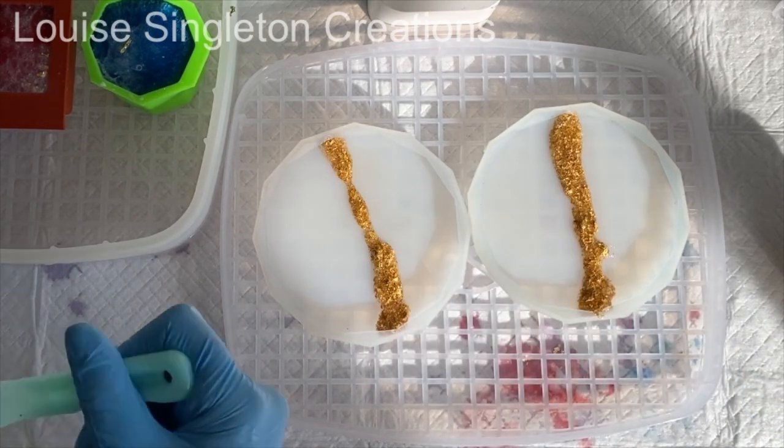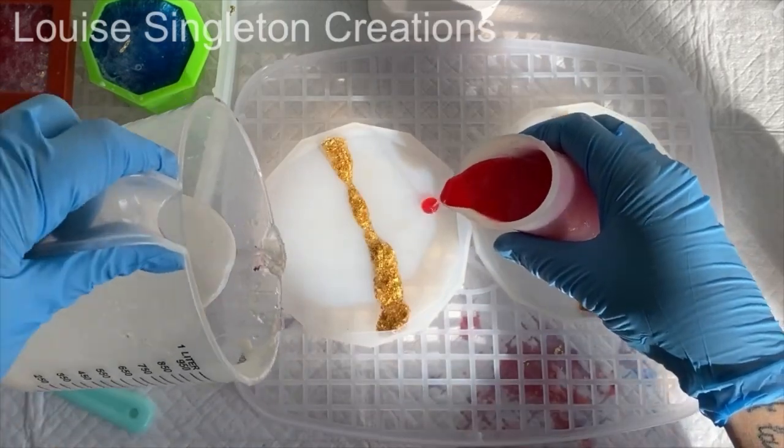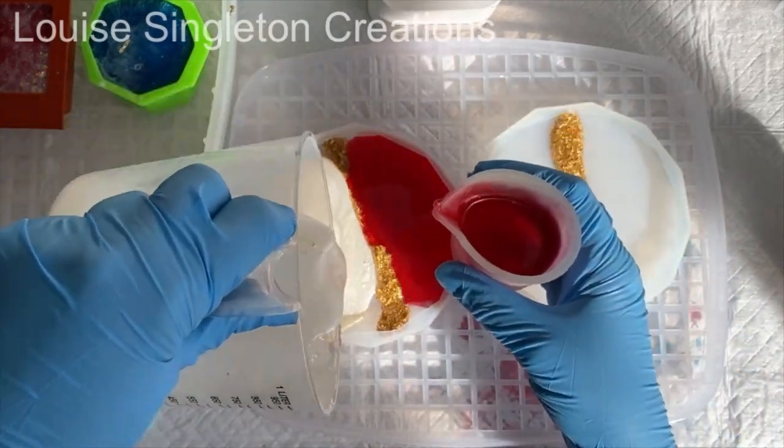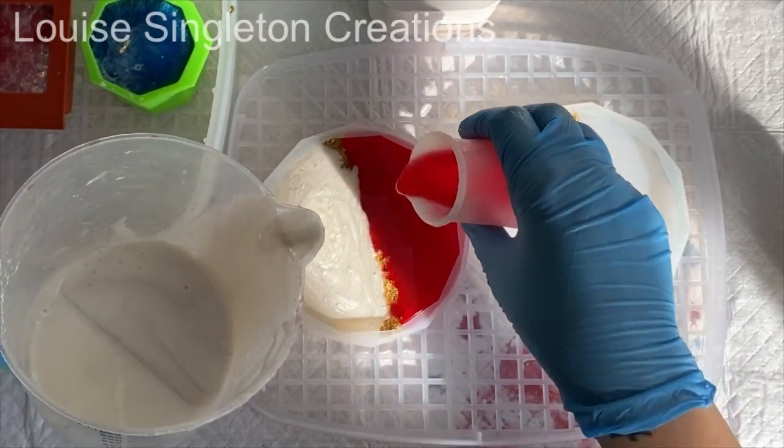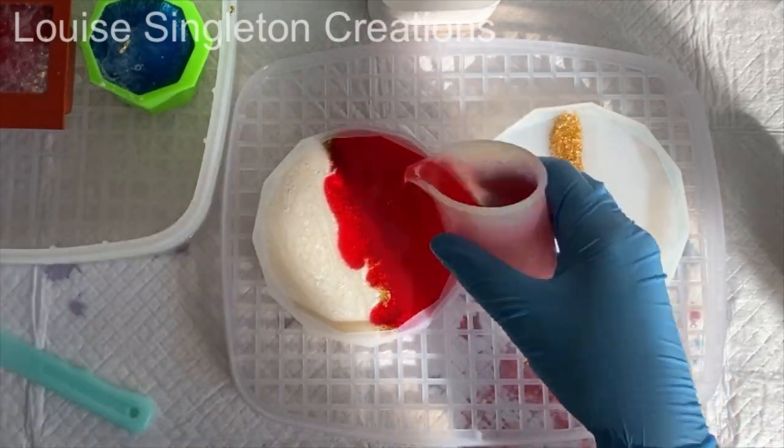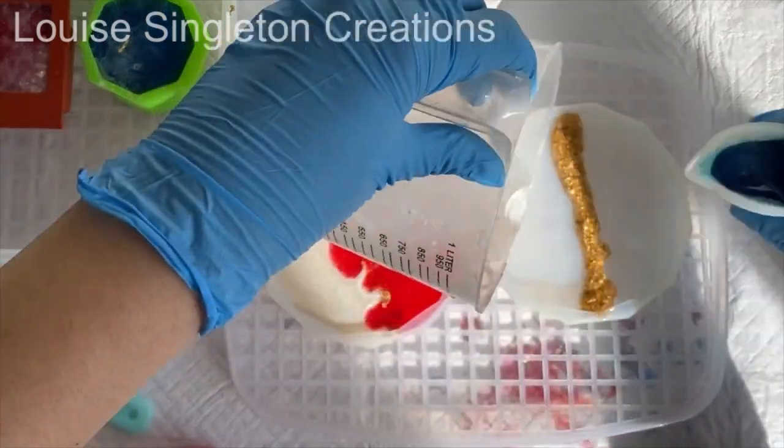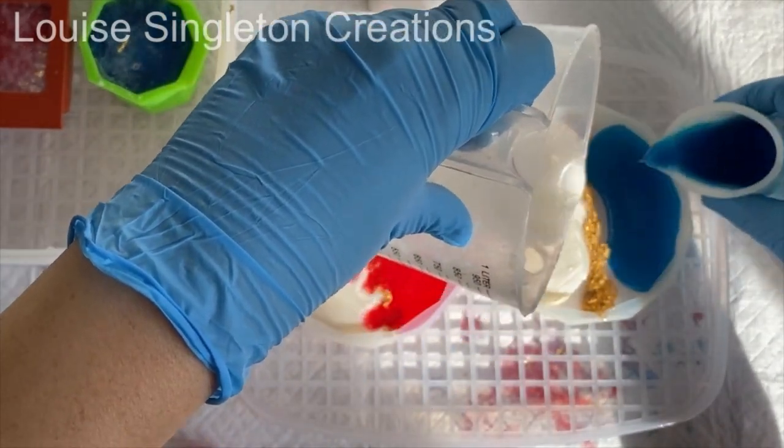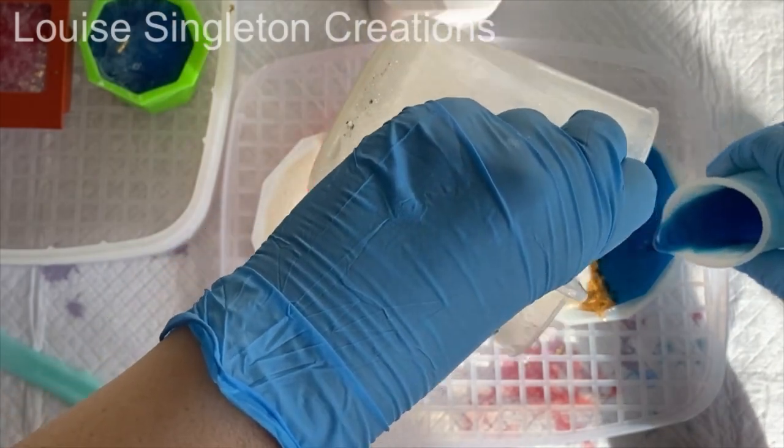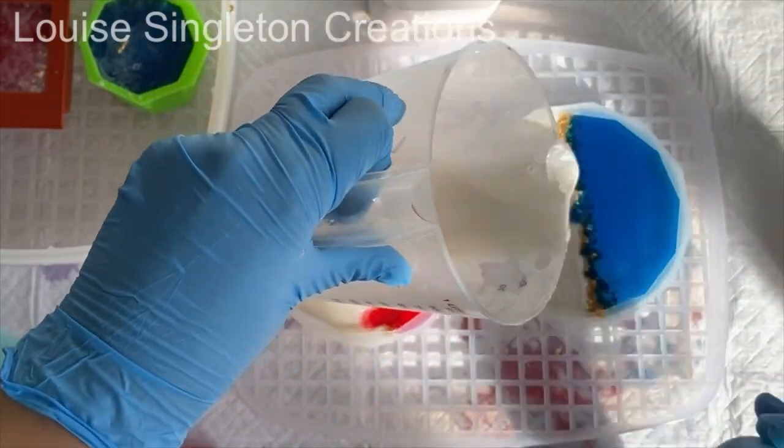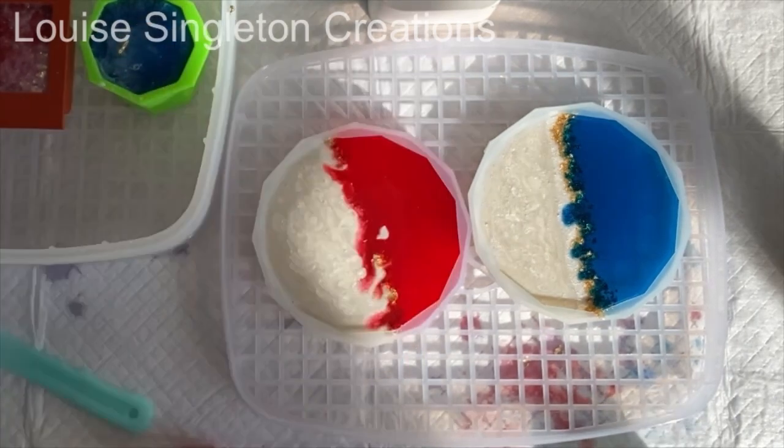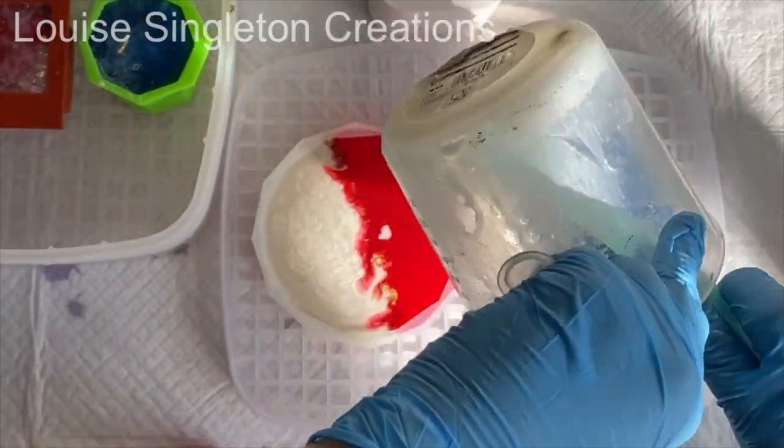So I just poured the two colors in at the same time either side of the gold line and let the resin work its magic by itself. This idea is good if you're a beginner because you can't really go wrong, unless you really want a definite line between the two colors. But if you're happy for them to merge together, this is really easy and you get some really interesting effects happening.